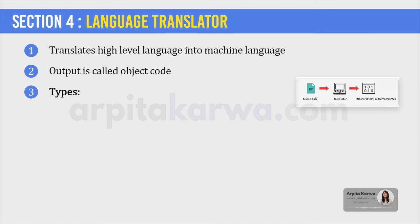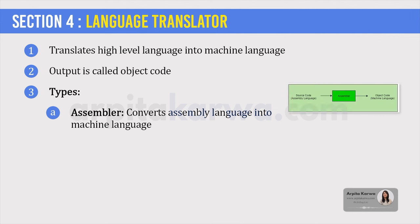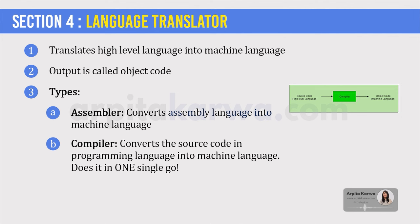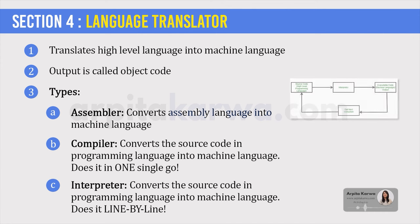There are three types of language translators. First is the assembler, which converts assembly language into machine language in the form of zeros and ones. Then we have a compiler, which converts the source code written in a programming language into machine language. The compiler converts the entire code simultaneously. The next is an interpreter, which also converts high level language into machine language, but it does this line by line and not the entire code simultaneously like a compiler. This is the basic difference between a compiler and an interpreter.